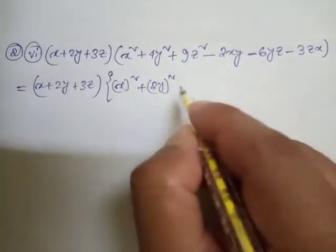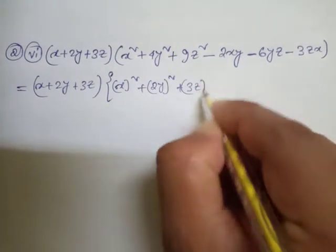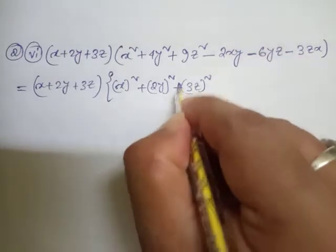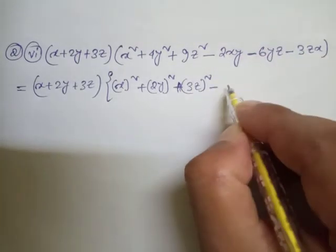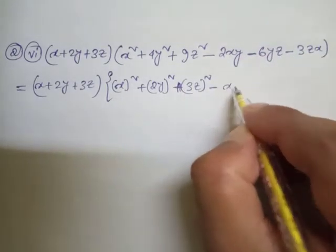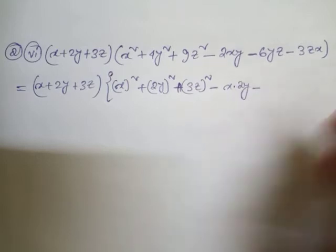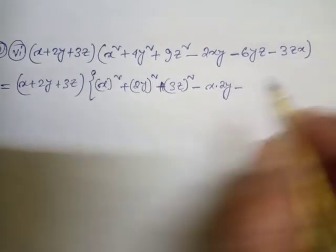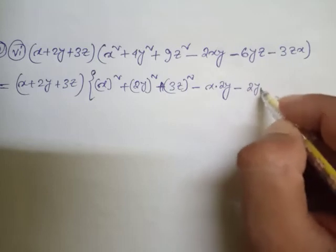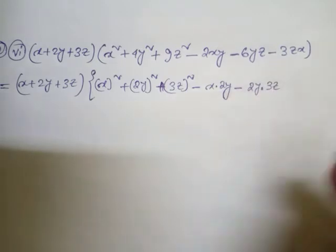Minus ab, minus bc. bc means here 2y and 3z, and ac means here 3z into x. So students, we can apply here formula number 4.